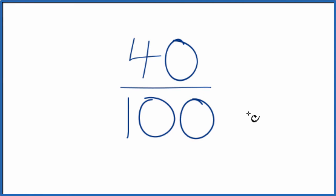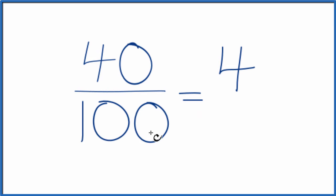So we need to find a common factor, something that goes into both 40 and 100. I know that 10 would go into 40 and into 100, so let's divide 40 by 10. That'll give us 4, and we can divide 100 by 10, that gives us 10.